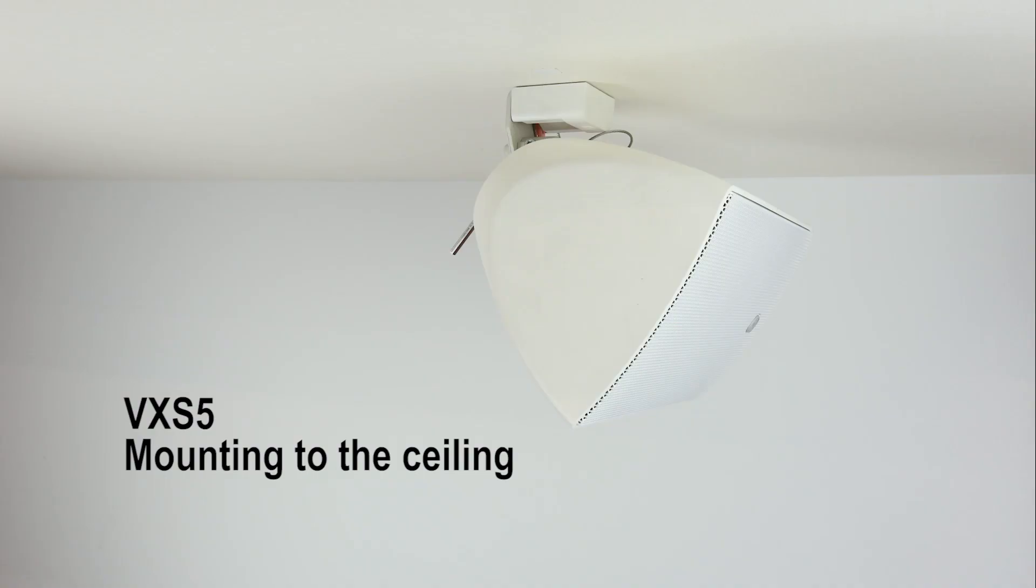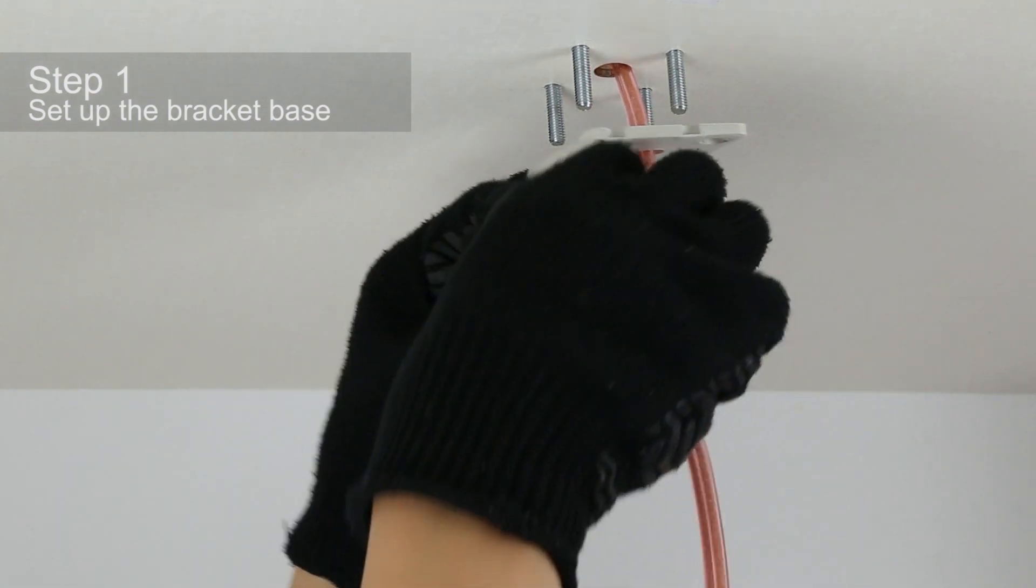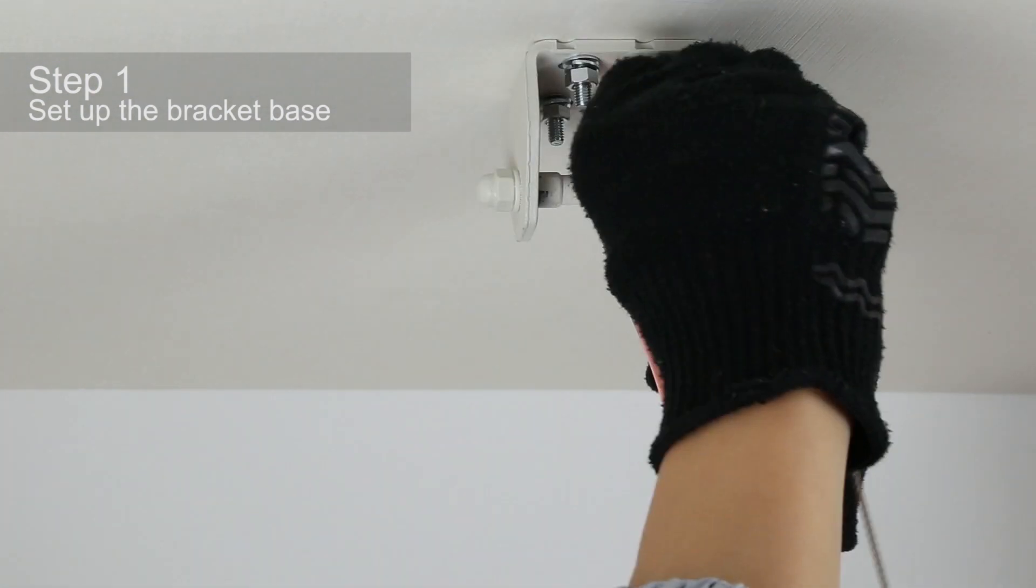Now, let's mount the VXS horizontally to the ceiling. Stabilize the bracket base to the ceiling. Install the bracket base onto the ceiling according to the direction that you want to project the sound, and install the safety wire.